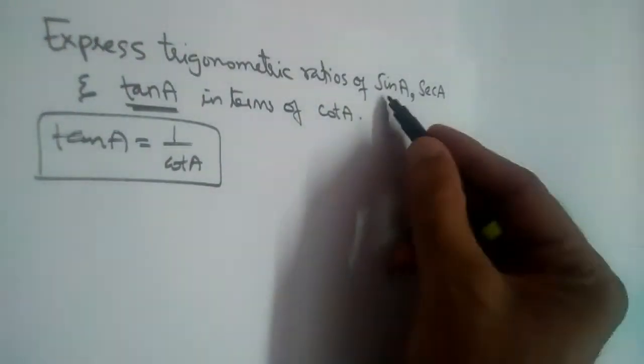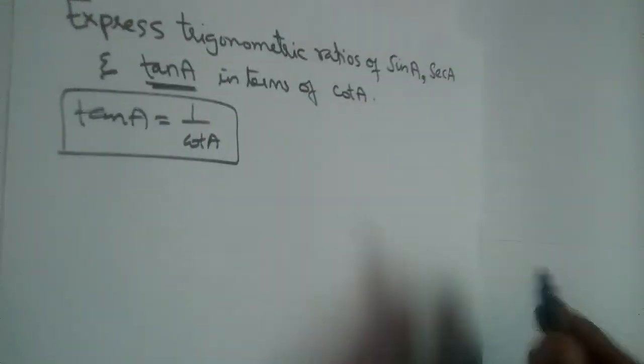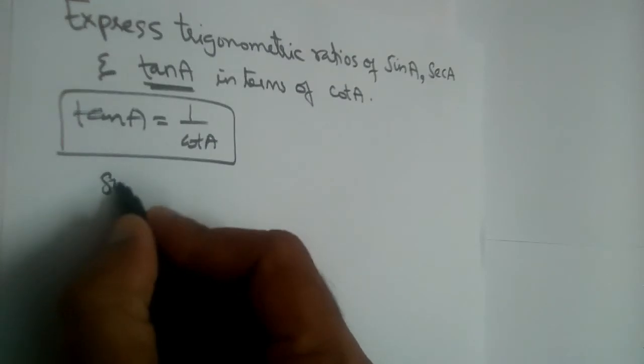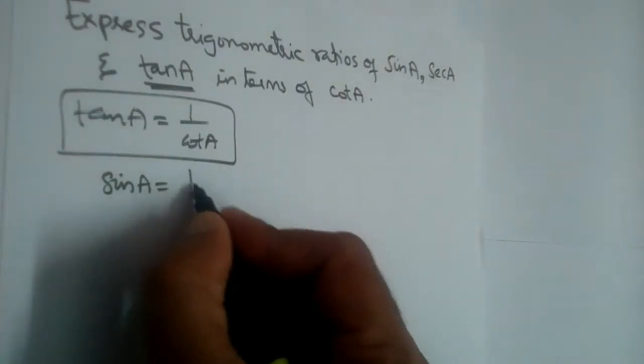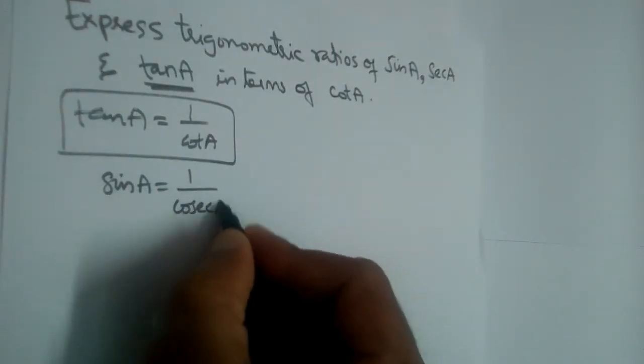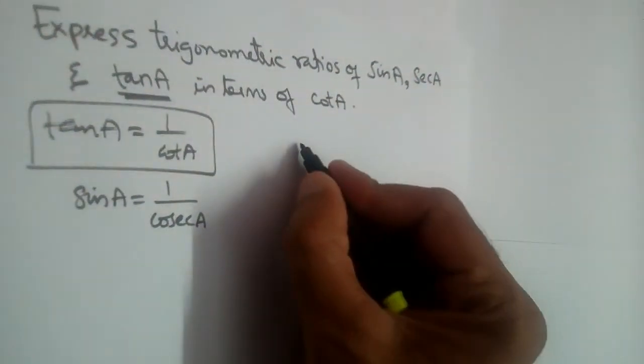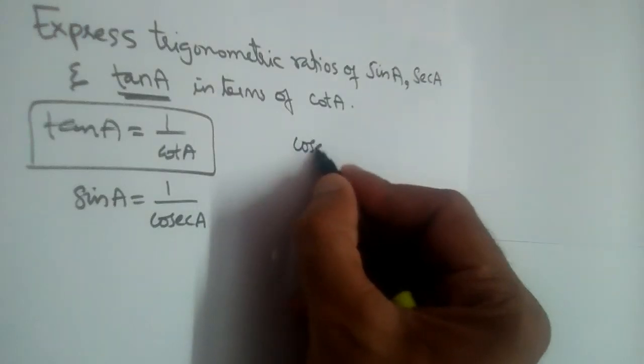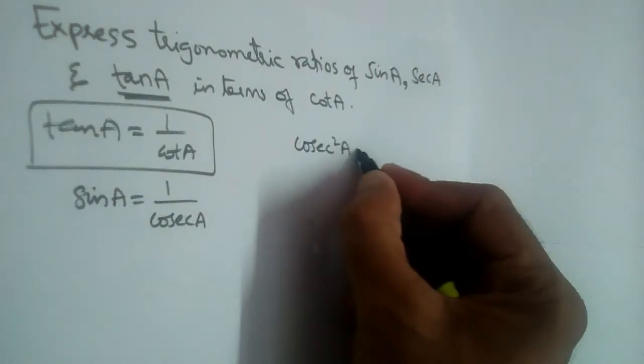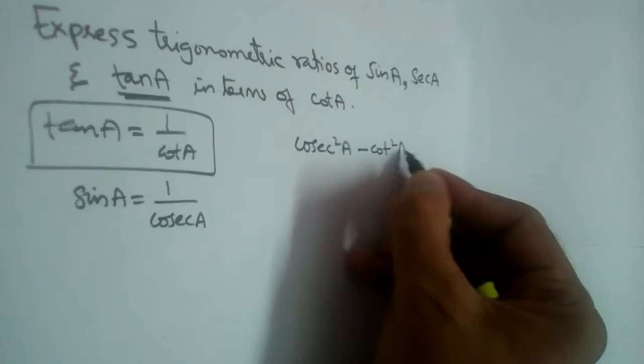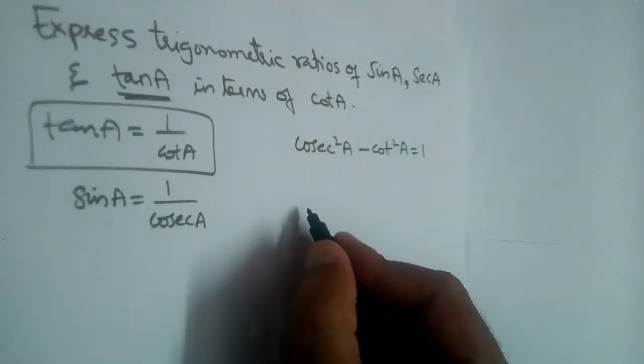Let us write sin and secant. Can we write sin as 1 by cosecant? Yes. We have an identity: cosecant square A minus cot square A equals 1.